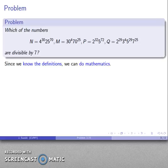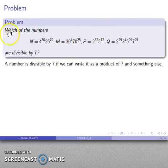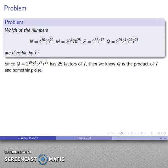Well, we know the definitions so we can do mathematics. If you don't know the definitions you cannot do mathematics. You can push symbols around on paper and get the right answer, but you will never be doing mathematics. You have to know the definitions. I can't emphasize that enough. Now in this case, the question involves which of these numbers are divisible by seven. By the definition, a number is divisible by seven if we can write it as a product of seven and whatever else there is.